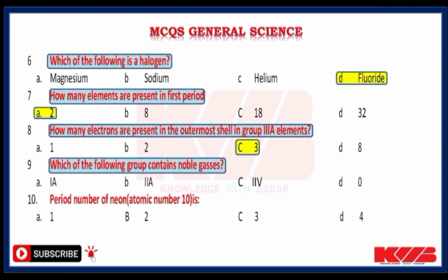Which of the following groups contain noble gases? 1a, 2a, or 0? Yes, group 0. What is the period number of neon (atomic number 10)? 1, 2, 3 or 4? Yes, 2.